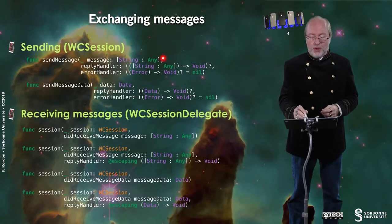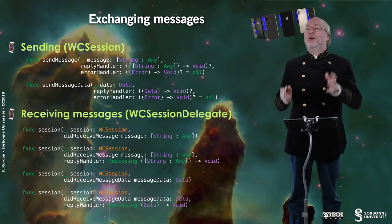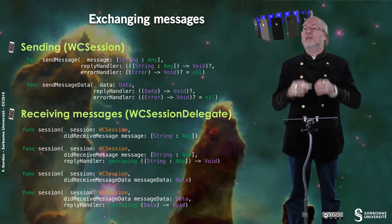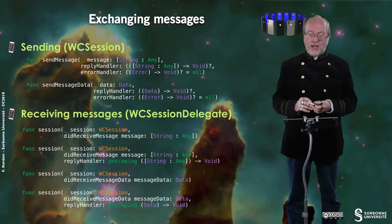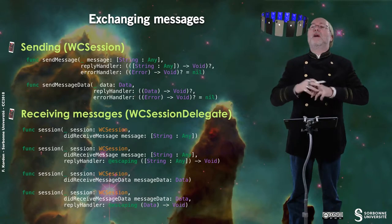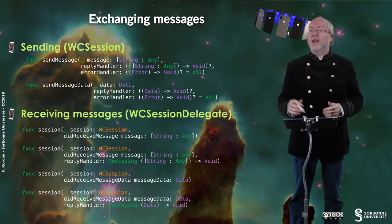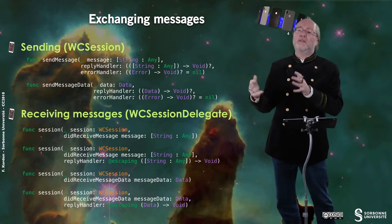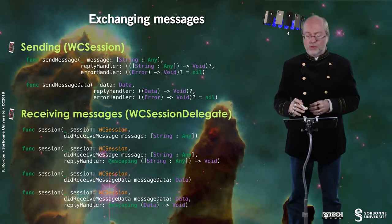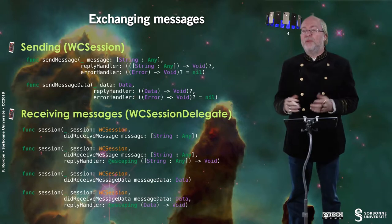Then you can exchange messages. When you send a message you use a WCSession method. You have two ways to send messages: either you send them as a dictionary of String and Any, which stands for simple or lightly serializable types, or you can have a complex data structure that you pre-serialize and then send as Data, or NSData in Objective-C.